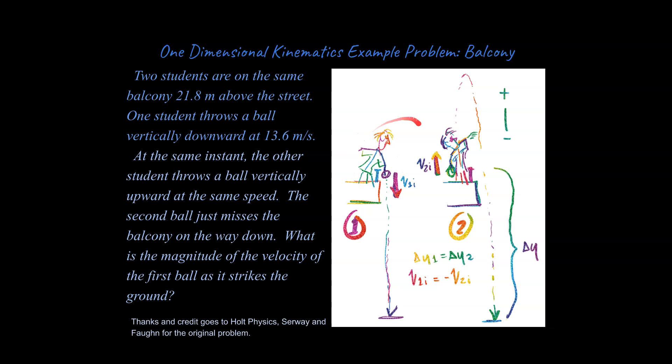So essentially the problem talks about two students on a balcony. The first one throws the ball downwards and the second one throws a ball upwards. Let's just pretend like this is going straight up and straight down, that there's no x motion. Notice that since this is our initial position and this is our final, they have the same delta y in both scenarios. And they have the same speed, it's just not in the same direction. So you could say they have the same speed but not the same velocity. They are thrown at exactly 13.6 meters per second.